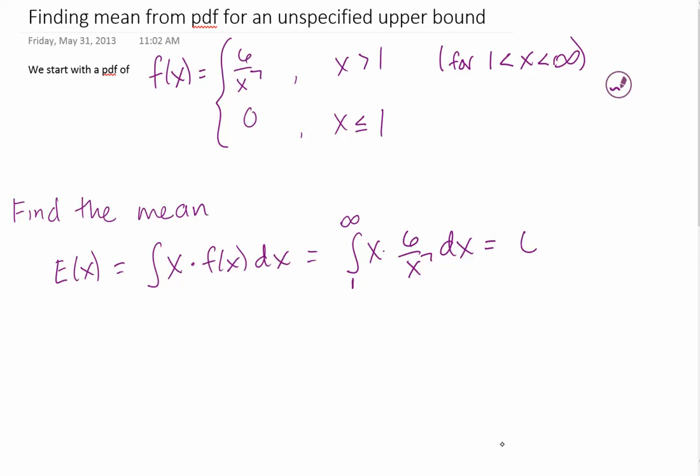So I can rewrite this as 6 times the integral from 1 to infinity of x to the negative 6 dx. And so I end up getting that this is negative 6 fifths times x to the negative 5th power evaluated from 1 to infinity.